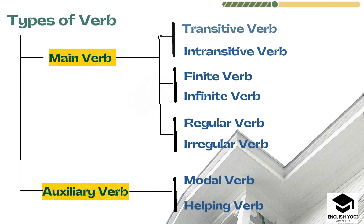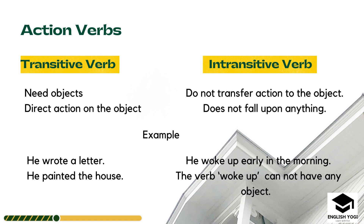One by one, we will try to learn the types of verb. First, we have transitive verb and intransitive verb — these are all action verbs. Transitive verb means that the particular verb needs an object in the sentence; there is a direction — the action is on the object. For example: 'He wrote a letter' — 'wrote' requires an object, which is 'letter.' Similarly, 'He painted the house' — 'painted' needs the object 'house.' So 'wrote' and 'painted' are transitive verbs.